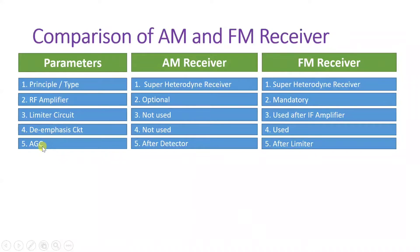When we consider automatic gain control, it is placed after the detector in an AM receiver, while it is placed after the limiter in an FM receiver. The limiter circuit is connected after the IF amplifier, so after the IF amplifier there is the limiter circuit, and after the limiter circuit there is the automatic gain control. In AM, automatic gain control comes after the detector.